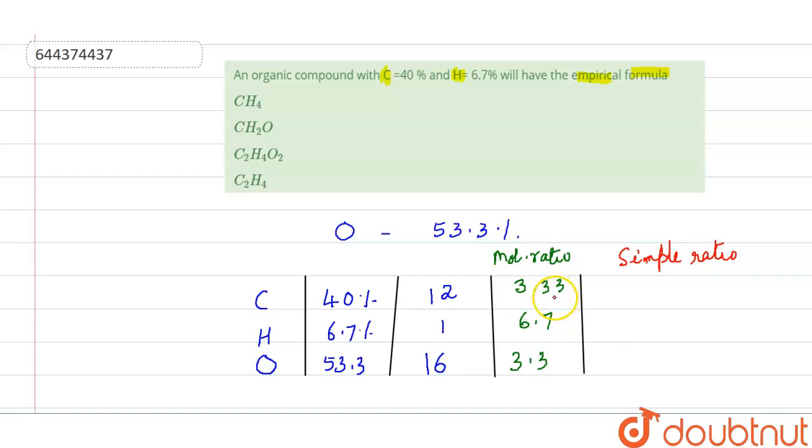The smallest value of the mole ratios is 3.33. So each mole ratio will be divided by this smallest value. So 3.33 by 3.33 ratio will be 1. 6.7 divided by 3.33 approximately 2. And 3.33 divided by 3.33 is 1.